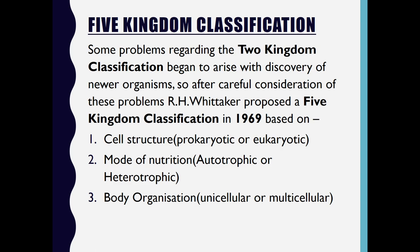After careful consideration of these problems, Robert H. Whittaker in 1969 proposed a five kingdom classification, which was based on the cell structure — that is, whether an organism is prokaryotic or eukaryotic — the mode of nutrition, whether the organism is autotrophic or heterotrophic, and the body organization, whether it is unicellular or multicellular.